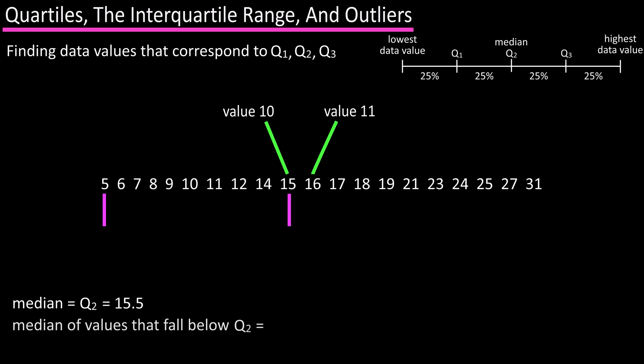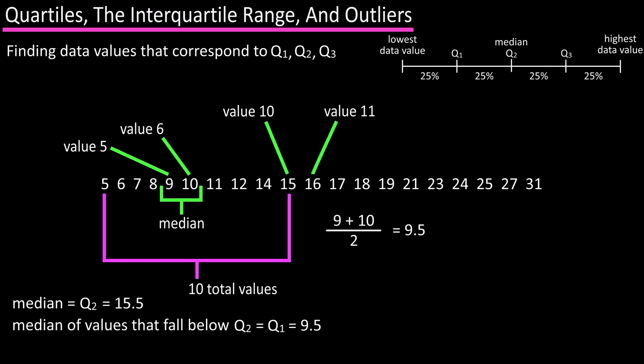Next, we find the median for the values that fall below Q2, which will be the value of Q1. Since we have an even number of values in this section of the data set, 10, the median will be between the two middle values, value number 5 and value number 6, which are 9 and 10. Add them together and divide by 2, and we get 9.5 as the value of Q1.